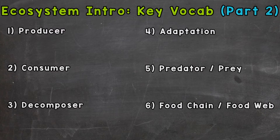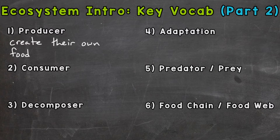So our first word for part two is producer. A producer is an organism that creates its own food energy. Plants, algae, and some bacteria are examples of producers. They take energy from the sun and convert it to food energy we can use here on earth. So again, producers create or produce their own food.